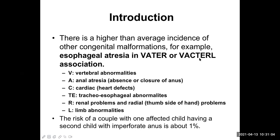What is the VACTERL or VATER association? V stands for vertebral abnormality — there may be spina bifida. A stands for anal atresia, which is imperforate anus. C stands for cardiac anomaly or heart defect — maybe congenital heart disease like VSD. T and E stand for tracheoesophageal fistula or tracheoesophageal abnormality, which includes esophageal atresia. R stands for renal or radial problem — the radius bone may be absent.